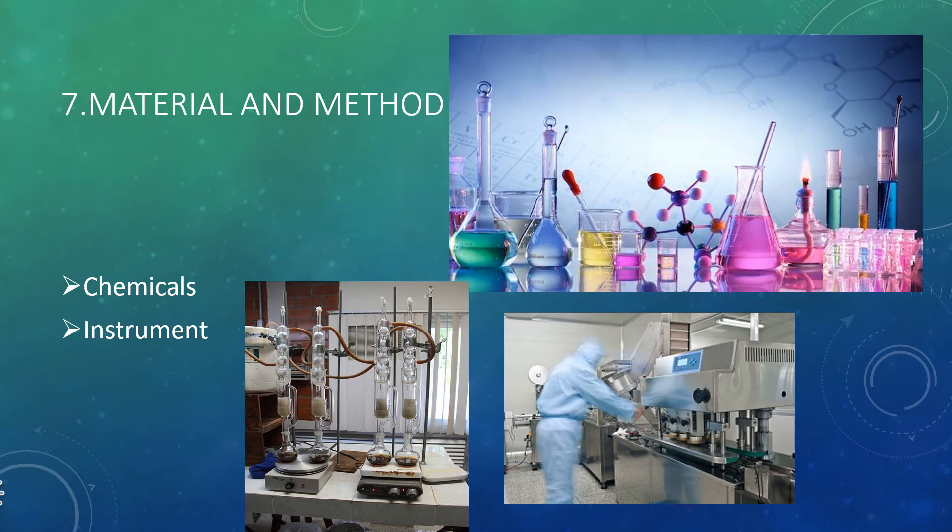Material and method. In this, the very first is chemicals. For the research project, what are the chemicals required and what are its costs, what are its effects? These all you have to check out. Another thing is instrument. Which instruments are required for the research and what are its costs? Is it affordable or not? These all points should be noted.